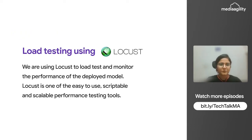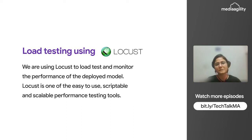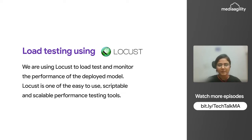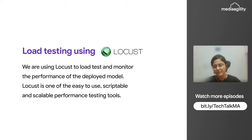For load testing, we use Locust. Locust helps us monitor the performance of the model. It's very easy to use, Python-based, and can very easily scale up to a million users, giving us the performance of the model easily. It depends on whether we are setting up Locust locally or in the cloud. If we want to test with less load like hundreds or thousands of users, we can test it locally depending on your machine's specs. But if you want to test with millions of users, you can test it using GKE — Google Kubernetes Engine — which can scale to millions of users.